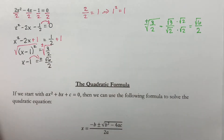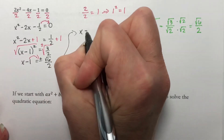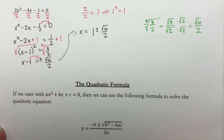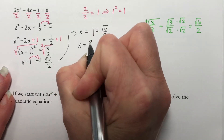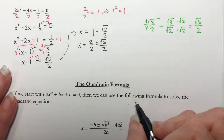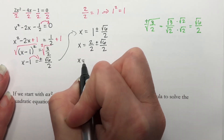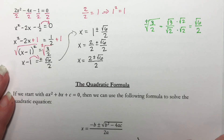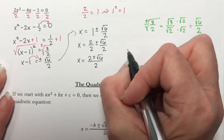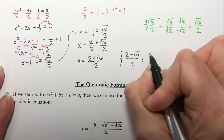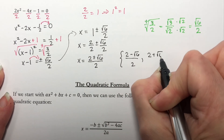Now I need to add 1 to both sides, and what I have is x equals 1 plus or minus the square root of 6 over 2. Now we need a common denominator, so I'm going to rewrite 1 as 2 over 2, plus or minus the square root of 6 over 2. Now we have a common denominator so we can combine these into one answer: 2 plus or minus the square root of 6, all over 2. So the two answers are 2 minus the square root of 6 over 2, and 2 plus the square root of 6 over 2.